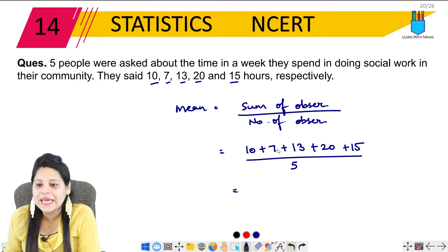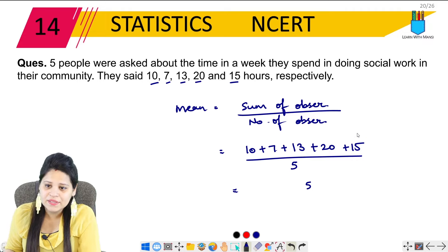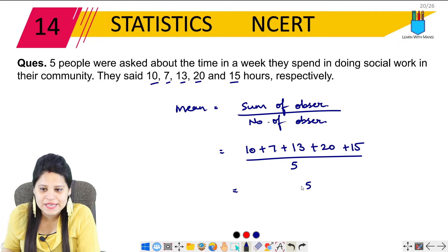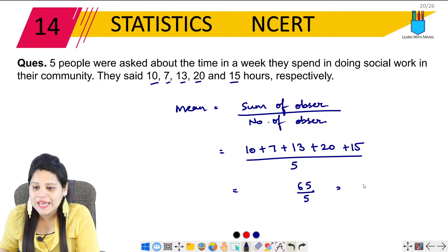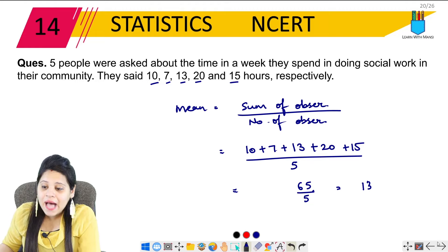Now if we have the raw data, wherever you have the amount of observations, the mean equals sum of observations upon the number of observations. For example, 5 people were asked about the time in a week spent in doing social work in their community: 10, 7, 13, 20, and 15 hours respectively. So mean equals sum of observations upon number of observations.